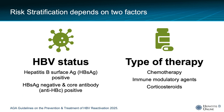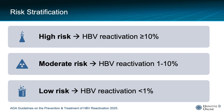Assessing an individual's risk of HPV reactivation involves two components: evaluating their HPV status but also their intended immunosuppressive therapy. When we consider these scenarios, we can group them as low, moderate, and high risk for HPV reactivation with probabilities as shown here.